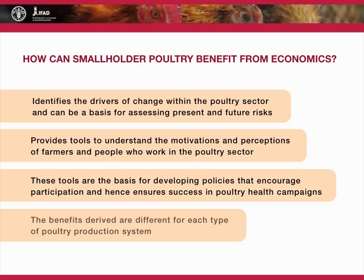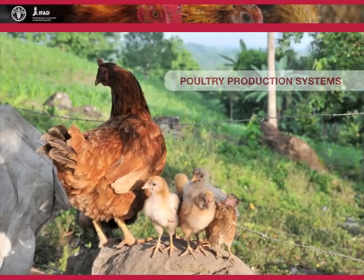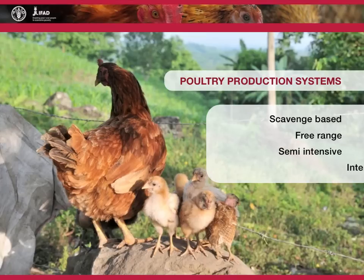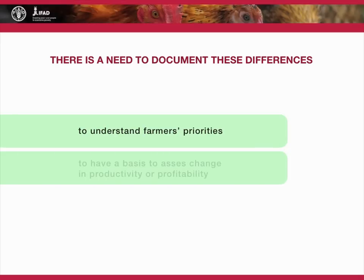The benefits derived are different for each type of poultry production system. The four main types of poultry production system are scavenge-based, free-range, semi-intensive, and intensive. It is important to document the differences between these production systems so as to understand the priorities of farmers and to have a basis to assess change in productivity or profitability.